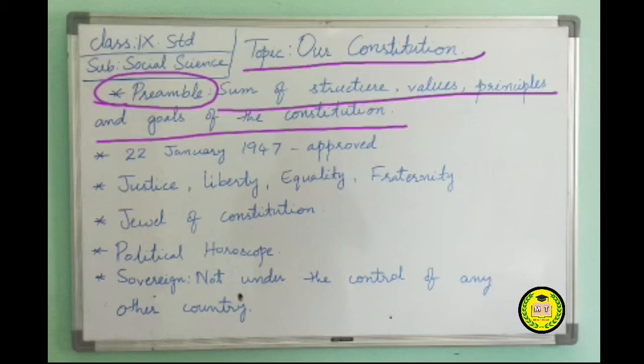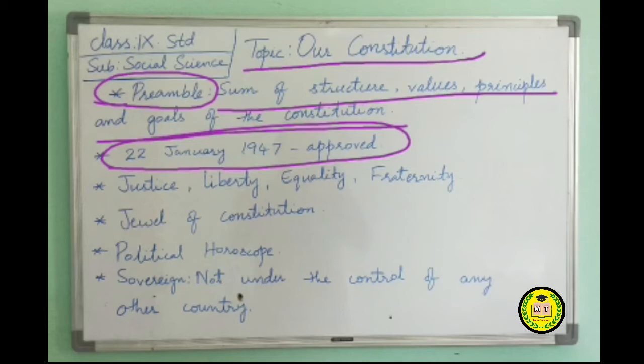The preamble is a part of the Objective Resolution put forward by Jawaharlal Nehru on December 13, 1946, and approved by the Constituent Assembly on 22 January 1947. This resolution upholds the nature of India as a sovereign democratic republic, as well as social, economic and political justice for all the people.